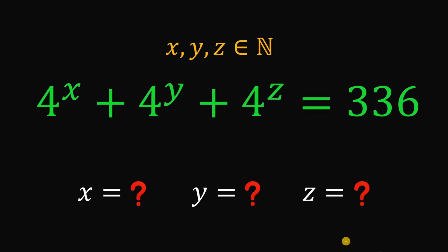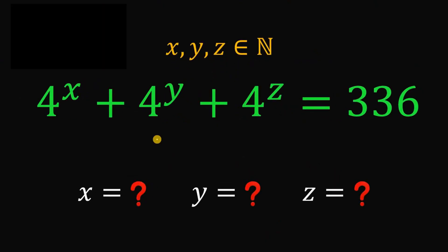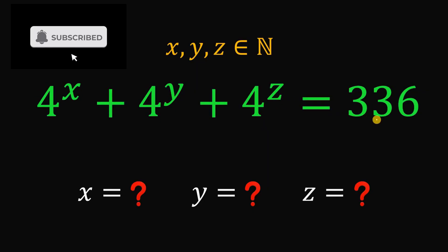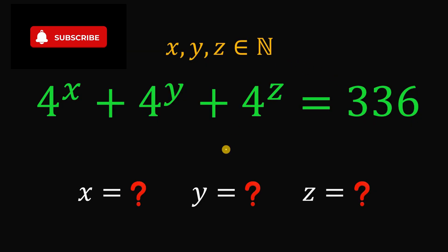Can you solve this algebra challenge? Here's the question. Given this equation: 4 raised to the power of x, plus 4 raised to the power of y, plus 4 raised to the power of z equals 336, wherein x, y, and z are all natural numbers, then what is the value of x, y, and z?